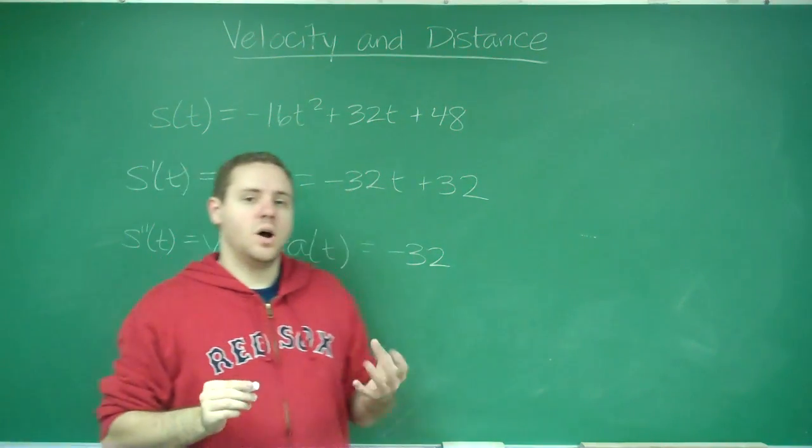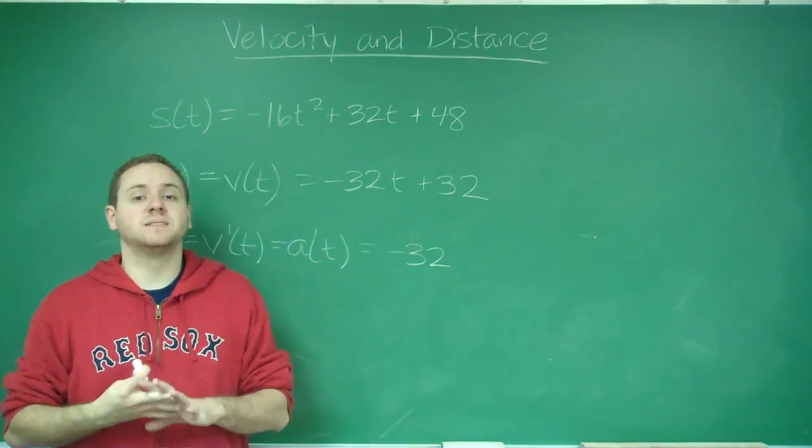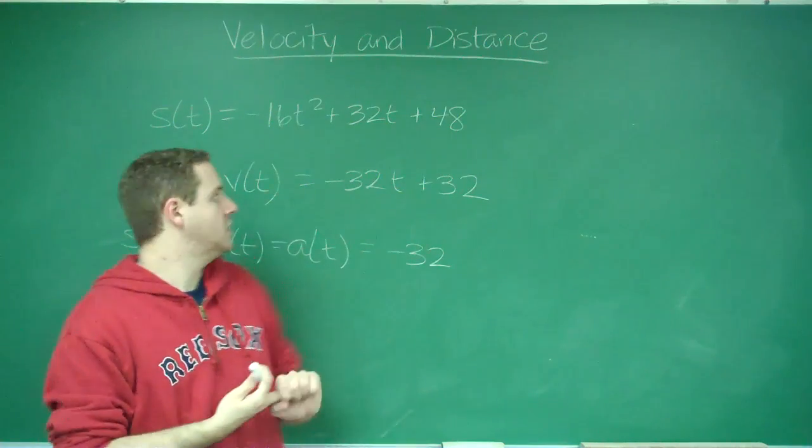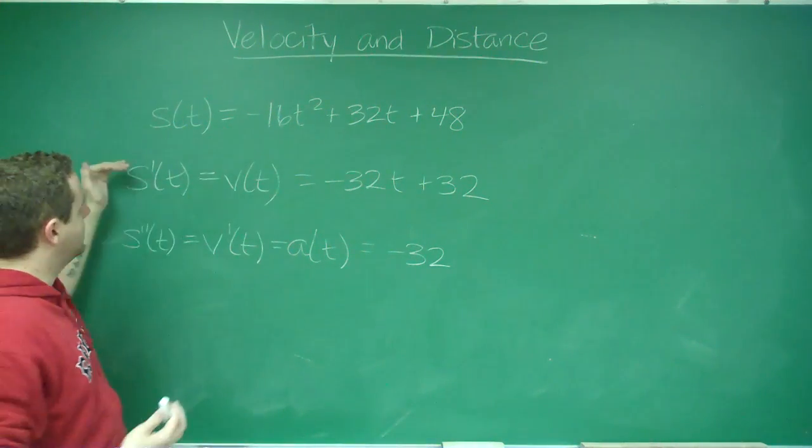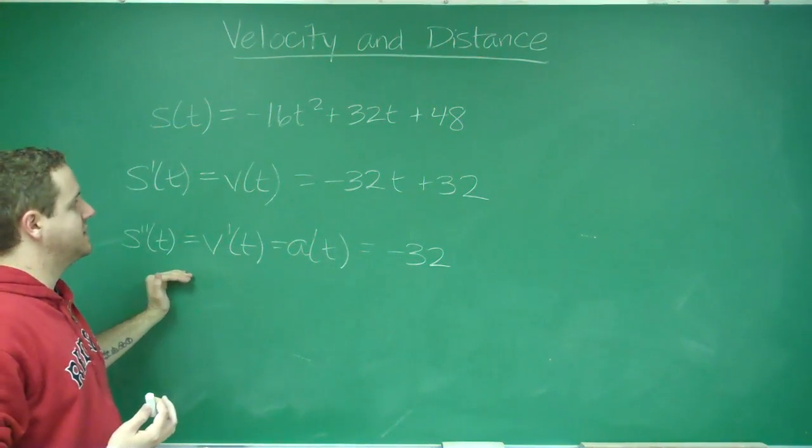So the acceleration of an object is how fast is its velocity changing. So we have position, first derivative is velocity, second derivative is acceleration.